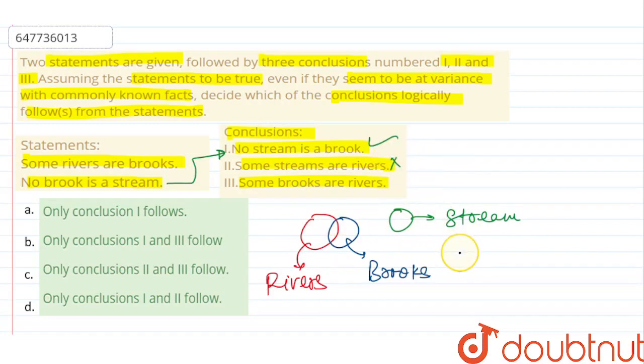In conclusion 3, some brooks are rivers. The same thing is given in statement 1. So conclusion 3 is exactly matching with statement 1. So this is correct.